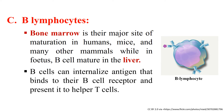When a T helper cell with a specific T cell receptor for that particular peptide binds, the B cell marker CD40 binds to CD40L on the T cell surface. When activated by the T cell, the B cell can undergo maturation as well as formation of memory cells. In this way, B lymphocytes also act as professional antigen presenting cells.